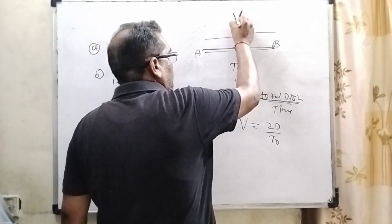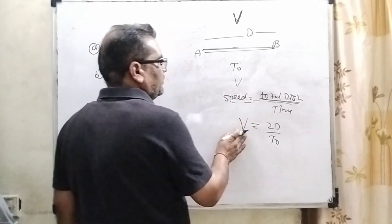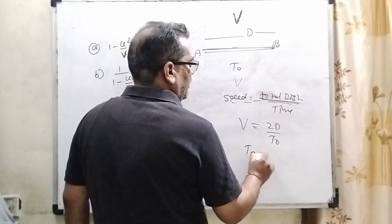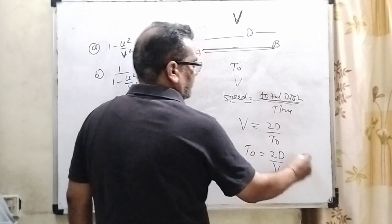So therefore, you have using here capital V the speed of boat in still water. That is V. And so therefore, T0 equal to 2D by V. It is the first equation.